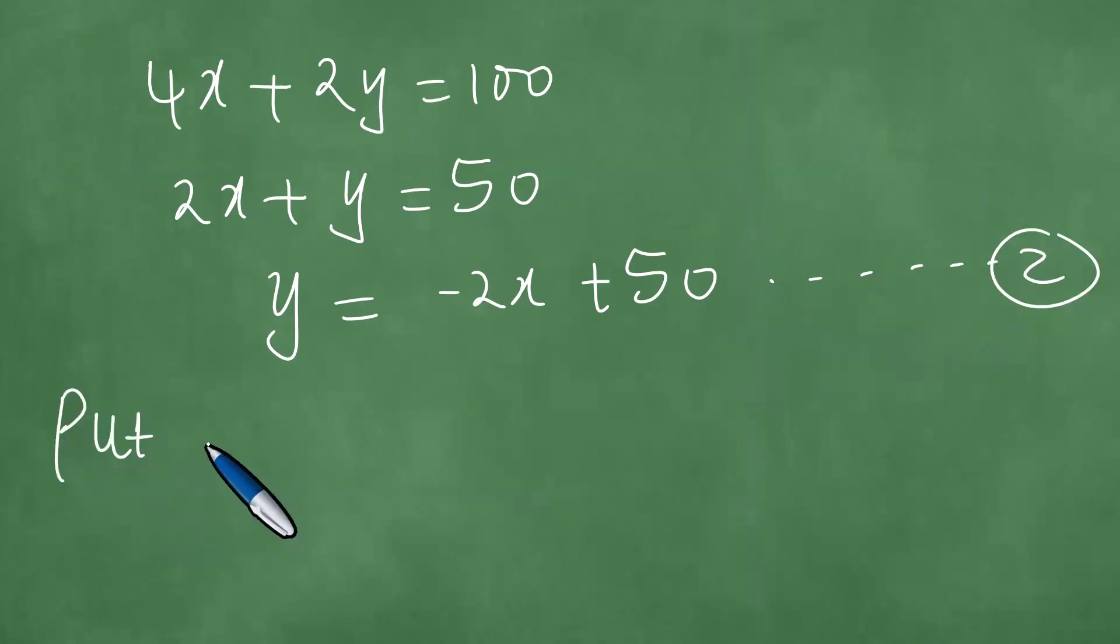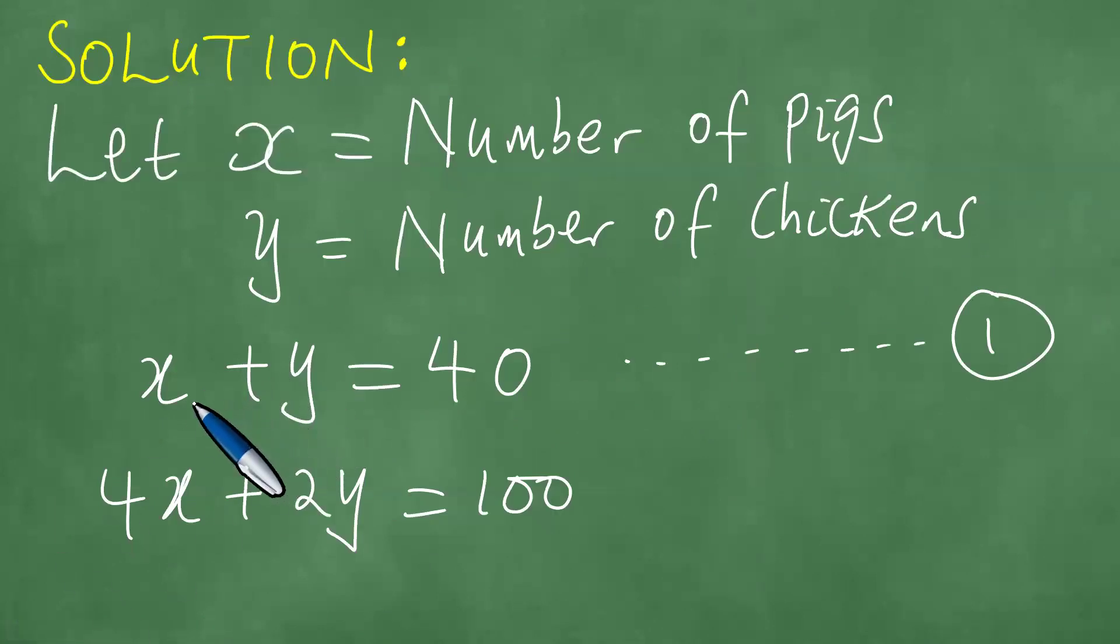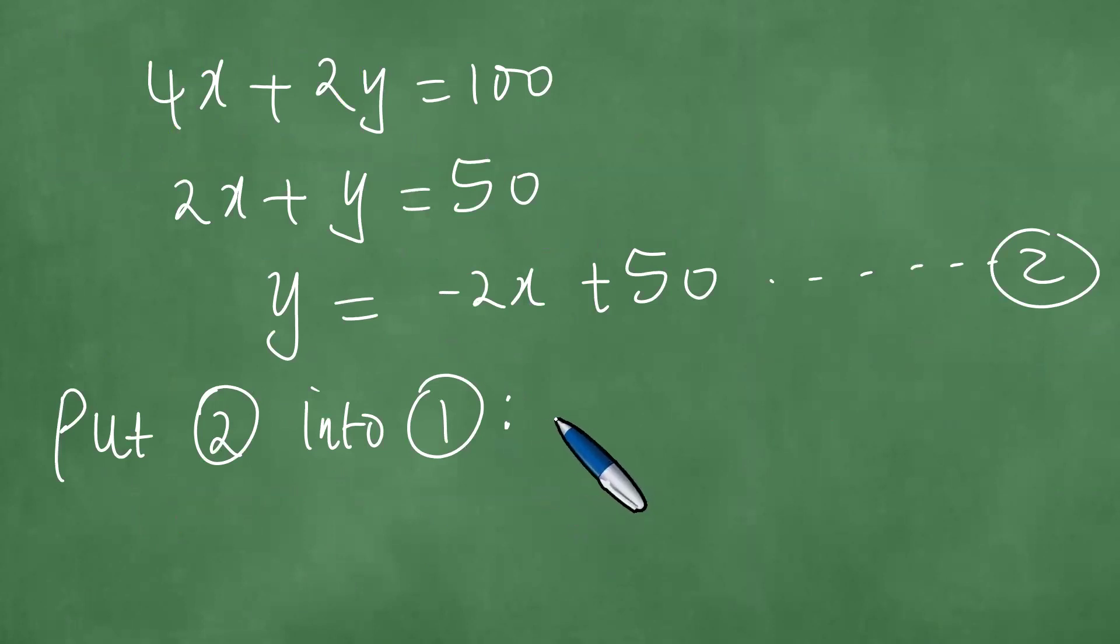So what you do, you put equation 2 into equation 1. So wherever there is Y in equation 1, you put minus 2X plus 50. We know that equation 1 is X plus Y equals 40, which is X plus, the Y is minus 2X plus 50, which equals 40.